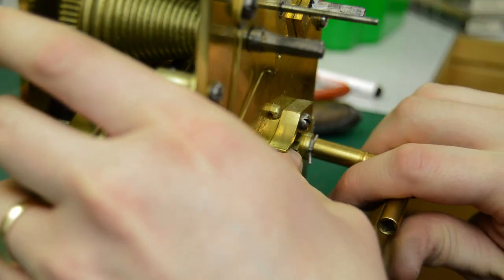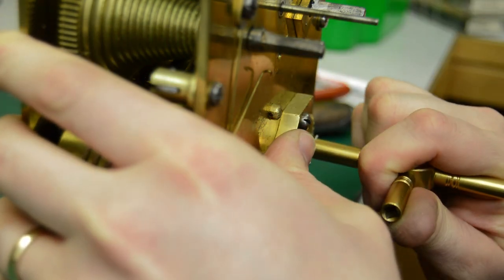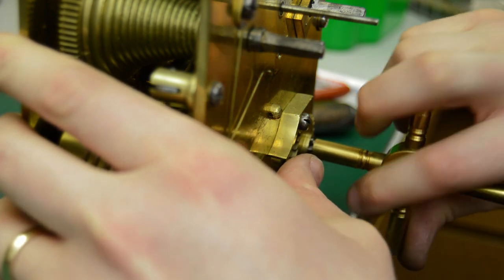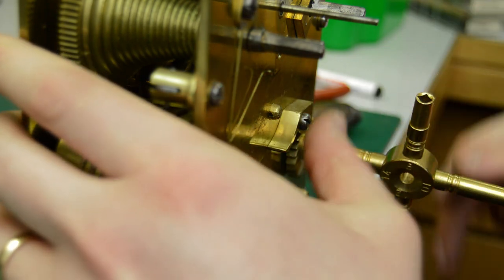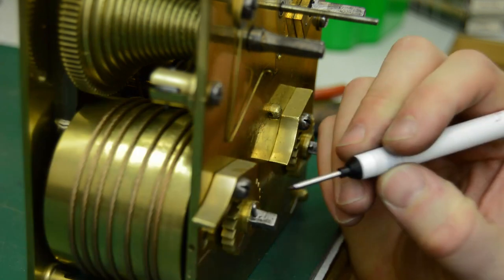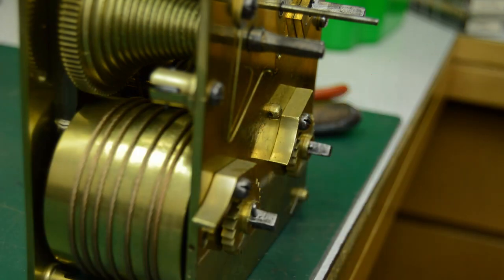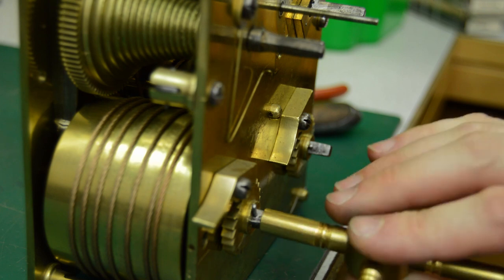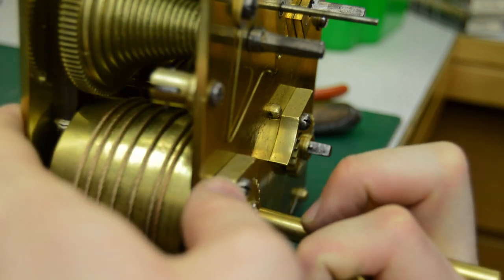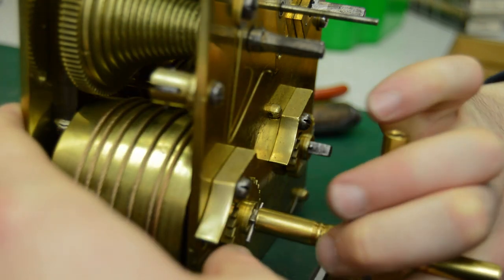Here I'm taking down the setup on the two springs. I mark the setup ratchets so that I can count the number of teeth of setup it had as received. As you can see this clock didn't have a great deal of setup on those springs.